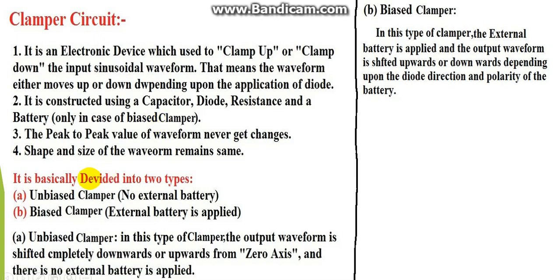Now we talk about what types of clampers there are. Basically, clamper circuits are divided into two types: unbiased clampers that are not supplied with external battery, and biased clampers where the external battery is compulsory. If we don't have external battery supply, then the clampers are unbiased.